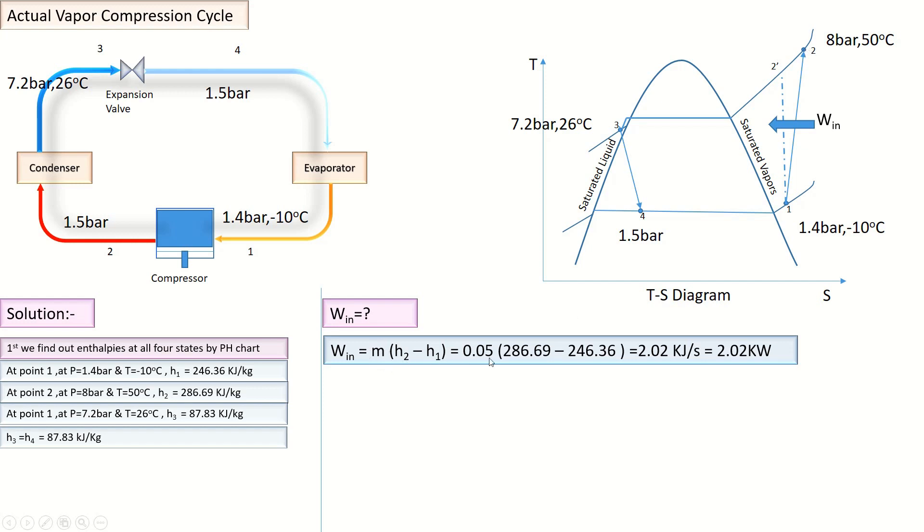Mass flow rate is given as 0.05 kg/s. Enthalpy at Point 2 we have found is 286 kJ/kg and enthalpy at Point 1 is 246 kJ/kg. After putting the values and calculating, we get W_c = 2.02 kilowatts as the required power of the compressor.